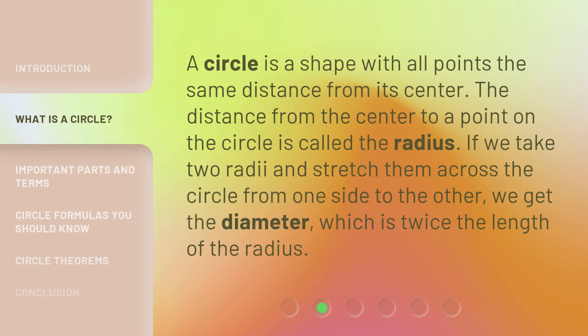A circle is a shape with all points the same distance from its center. The distance from the center to a point on the circle is called the radius. If we take two radii and stretch them across the circle from one side to the other, we get the diameter, which is twice the length of the radius.